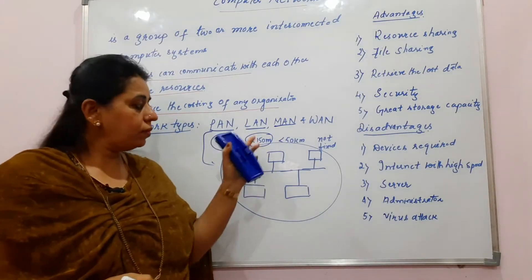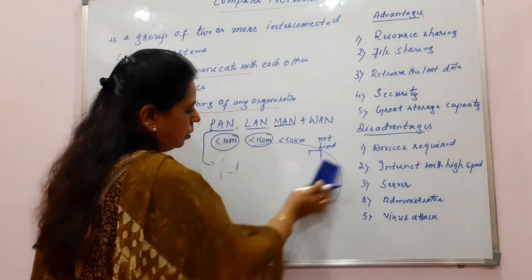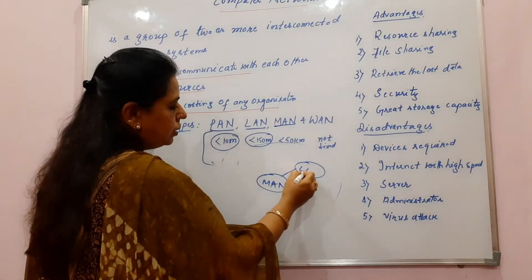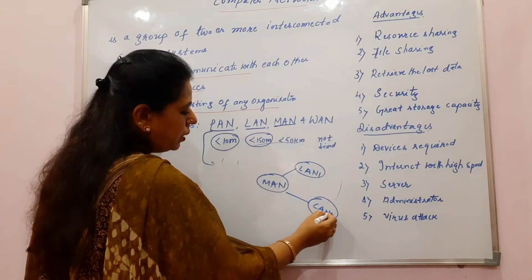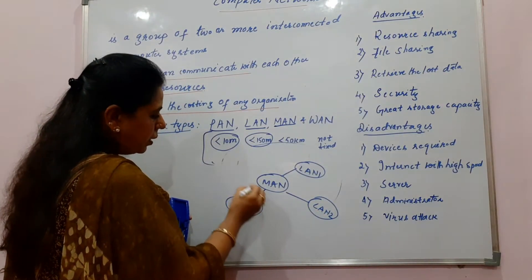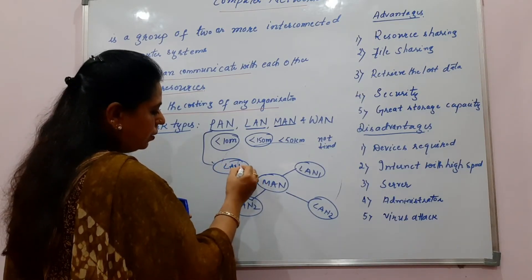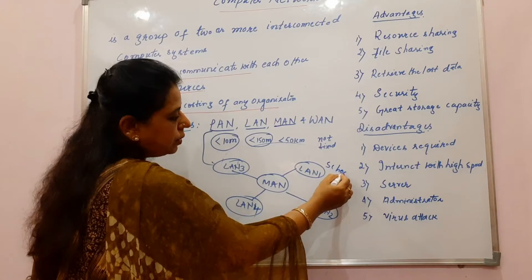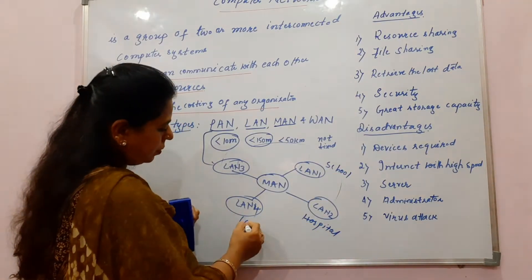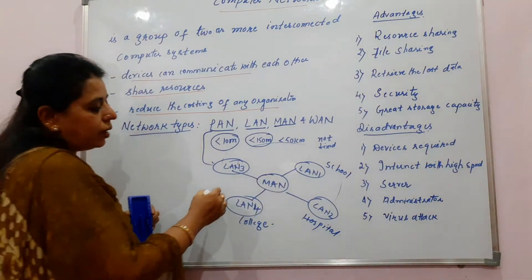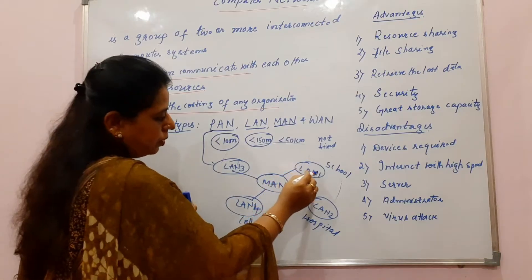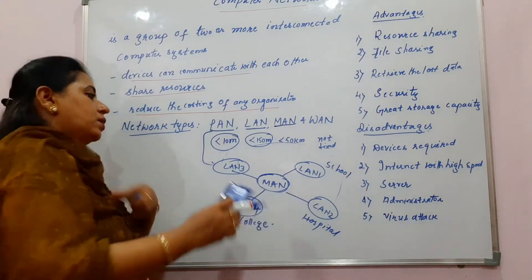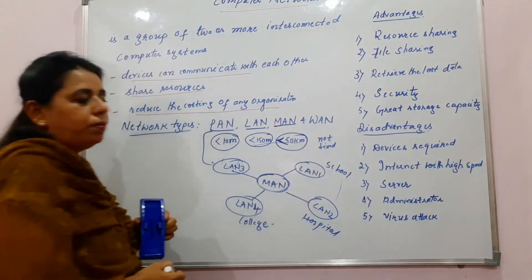We have MAN — Metropolitan Area Network. A collection of LANs will form a MAN. Here you can see there is LAN one and LAN two, so it is like you are connecting different organizations and different buildings in a city — for example, connecting a school, hospital, and college in a city via the Metropolitan Area Network. The range for this metropolitan network is 50 kilometers.